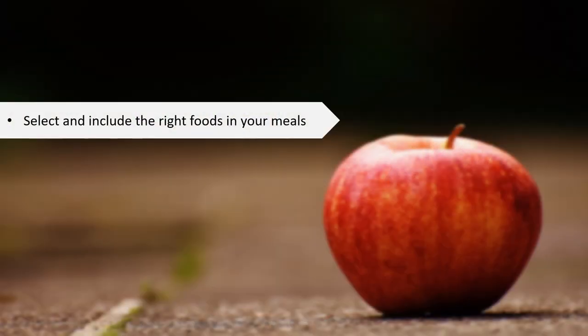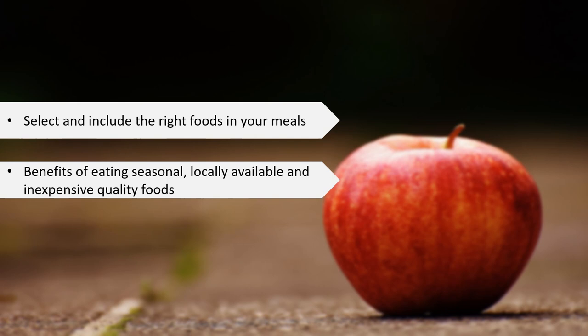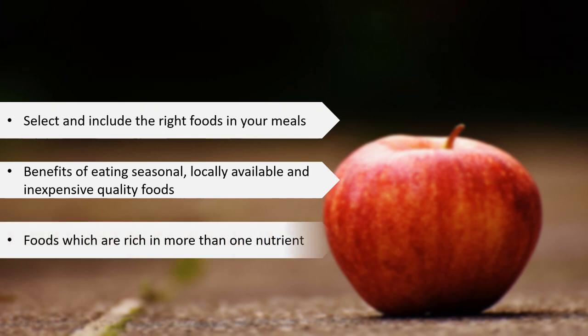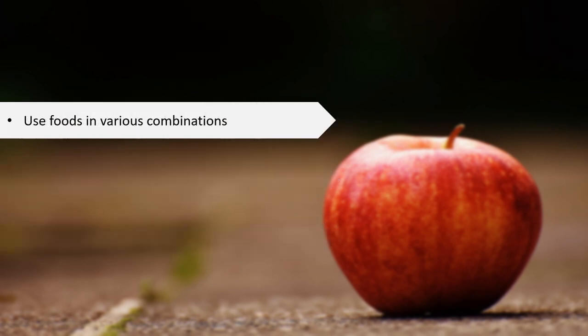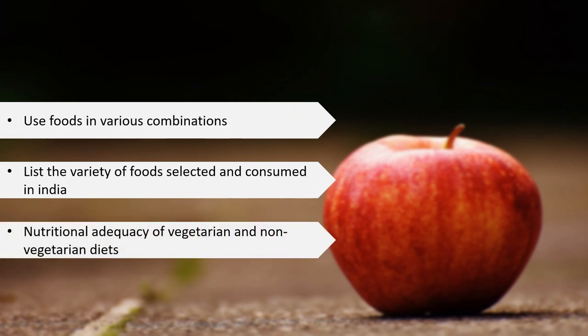We will be covering the following objectives in today's lecture: How do we select the right food in our meals? What are the benefits of eating seasonal, locally available and inexpensive quality foods? We will list the foods which are rich in more than one nutrient, use these foods in various food combinations, list the variety of foods selected in the Indian subcontinent, and discuss the nutritional adequacy of vegetarian and non-vegetarian diets.